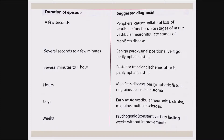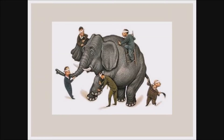Duration provides useful diagnostic clues. A few seconds of vertigo suggests peripheral causes, acute stage of vestibular neuritis, or late-stage migraine. Seconds to minutes suggests BPPV or perilymph fistula. Minutes to hours suggests posterior TIA, perilymph fistula, Meniere's disease, migraine, or acoustic neuroma. Days suggests acute vestibular neuritis, stroke, migraine, or multiple sclerosis. Weeks to months may suggest a psychogenic cause.